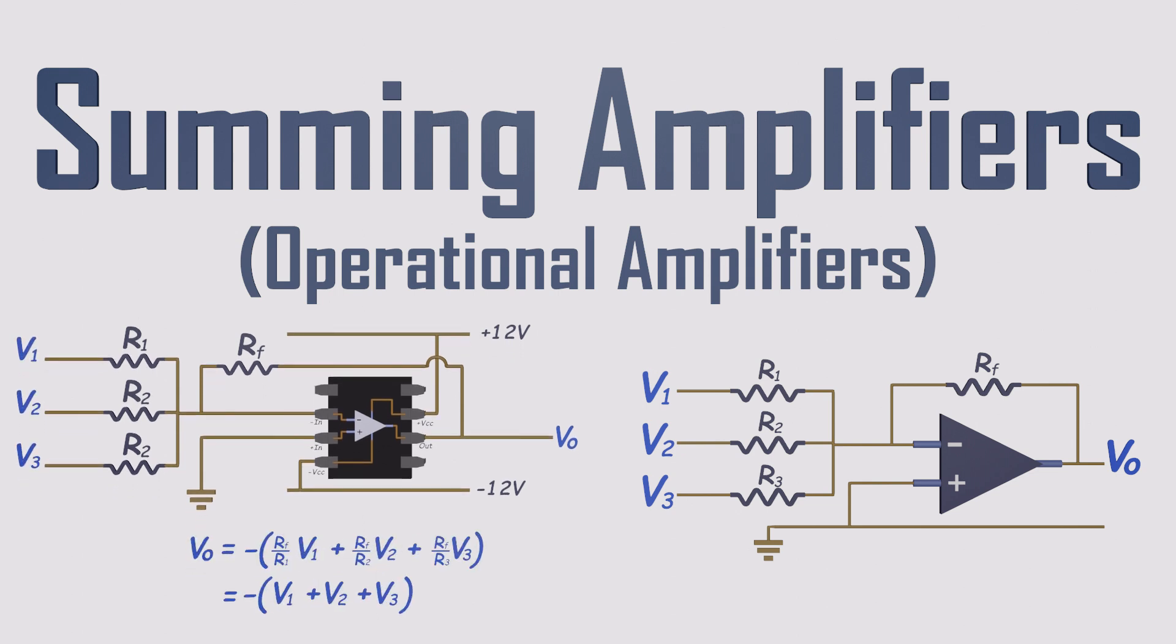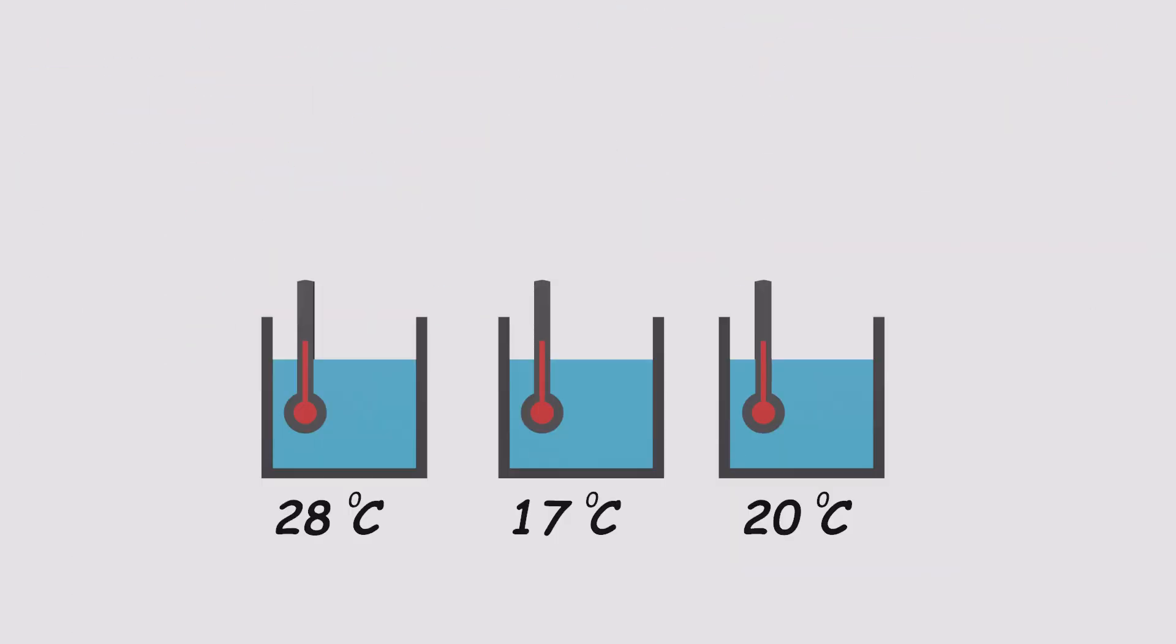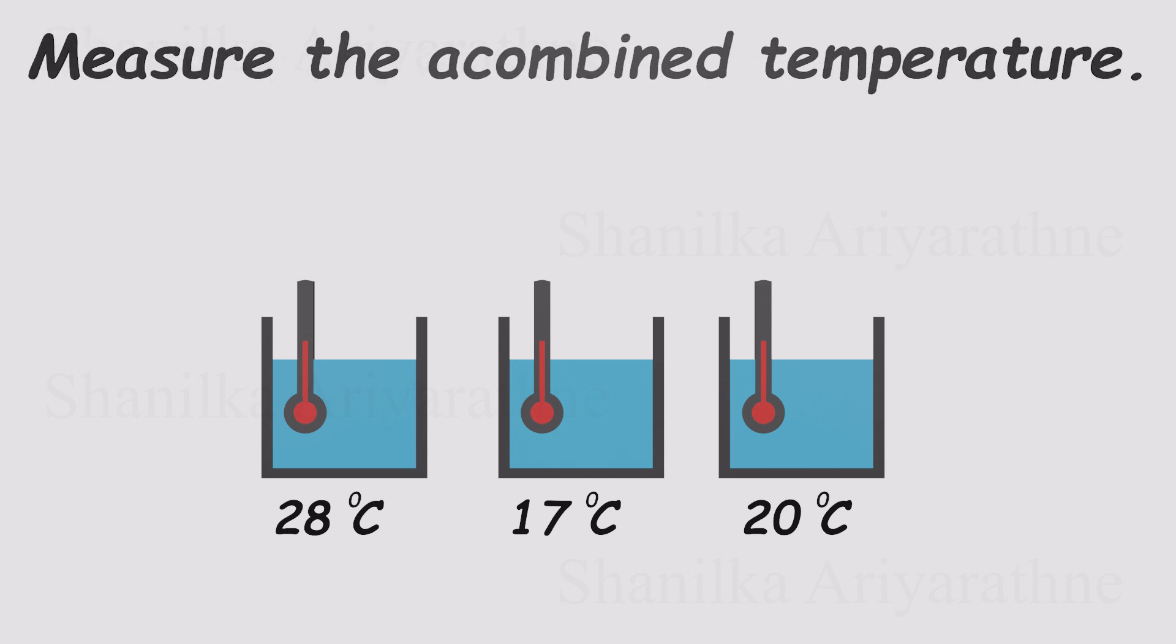Let's start with a simple example. Imagine you've got three containers of water, each at a different temperature. Now suppose you want to measure the total combined temperature automatically, in real time. How would you do that?